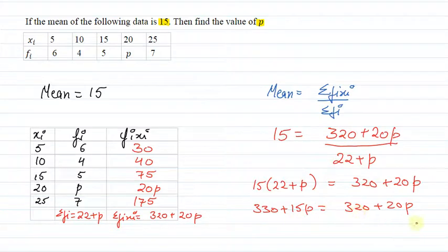Here, if we rearrange, 20P will come to the other side. This will be 15 minus 20P that will be equal to minus 5P. And 320 minus 330 will be equal to minus 10. If we solve this, we will get P equals 2.